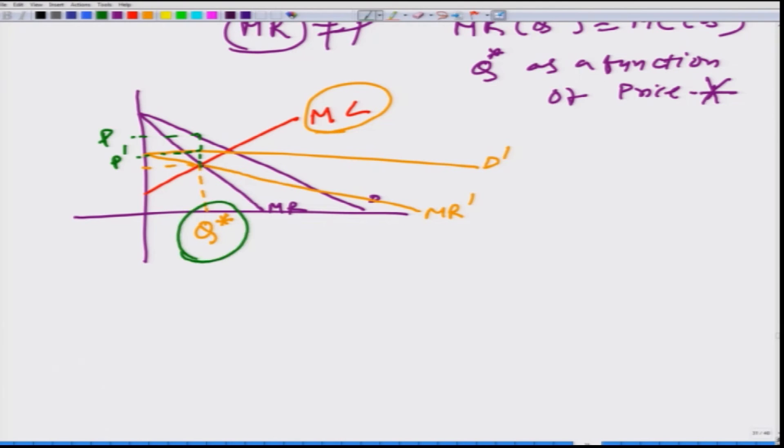You see, same quantity this firm would supply at different prices given that the markets have different demand functions. Very clearly, this Q cannot be expressed as a function of P, and when we cannot express Q as a function of P, we cannot write the supply function.